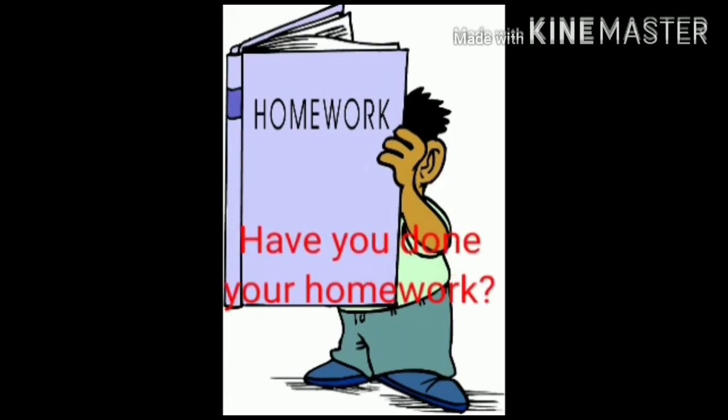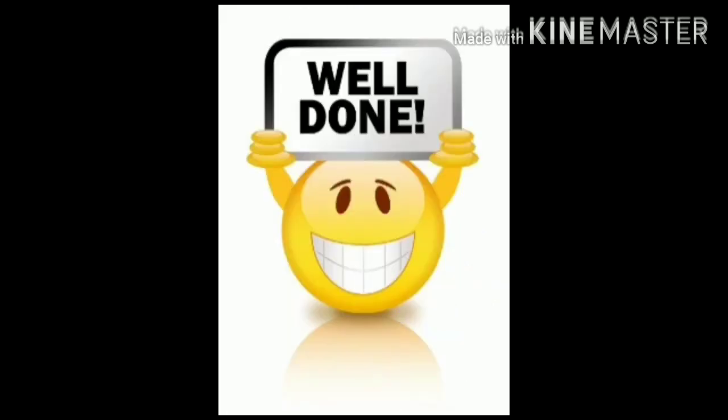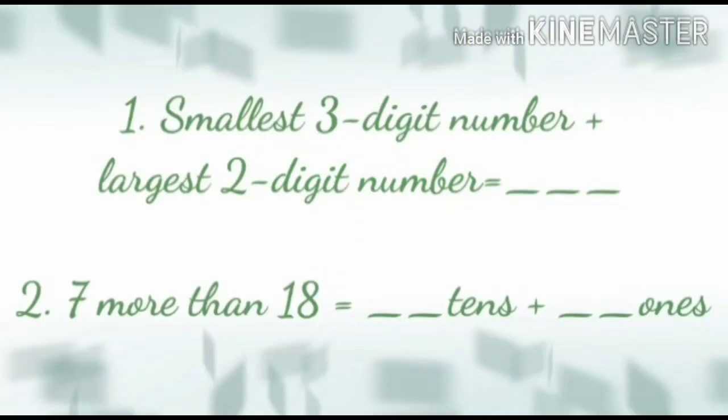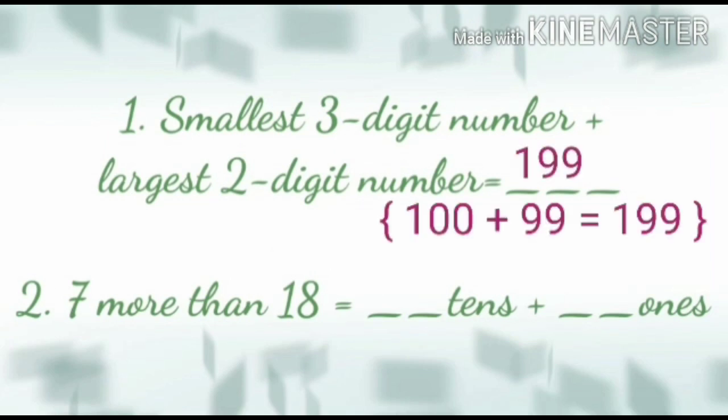Have you done your homework? Those who have done the homework, well done. Now, let us see the solution. Question number 1: Smallest 3-digit number plus largest 2-digit number equal to... Smallest 3-digit number is 100. Largest 2-digit number plus 99 is equal to 199.